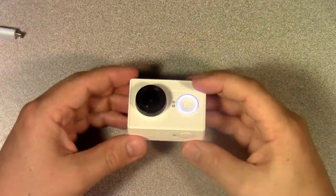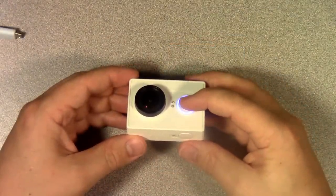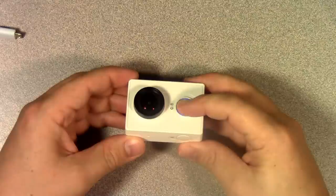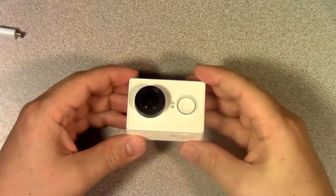Now the last thing you need to know is how to turn the camera off. And you do that by simply pressing and holding the power button in the front for about 3 or 4 seconds. And it will beep and then turn off.